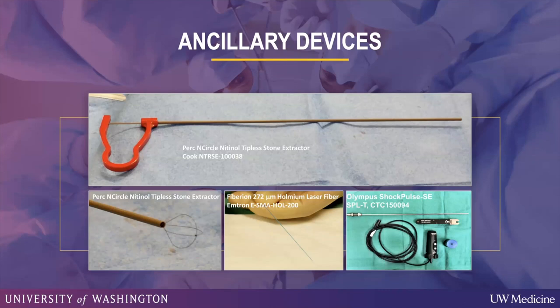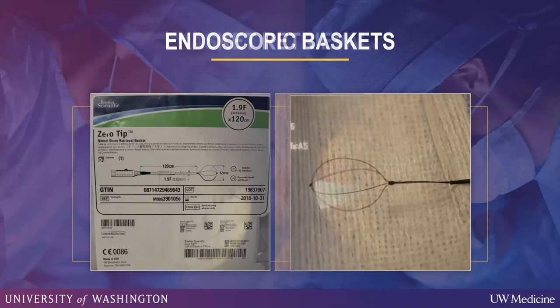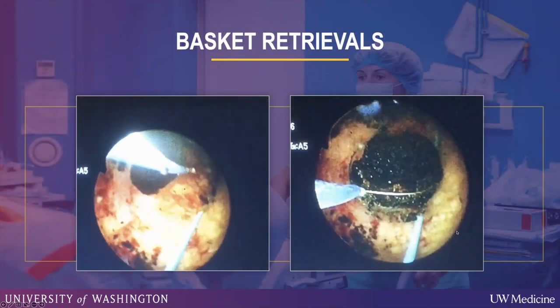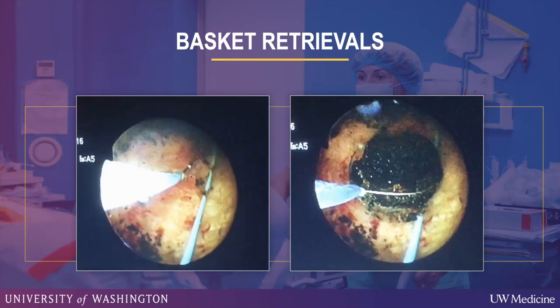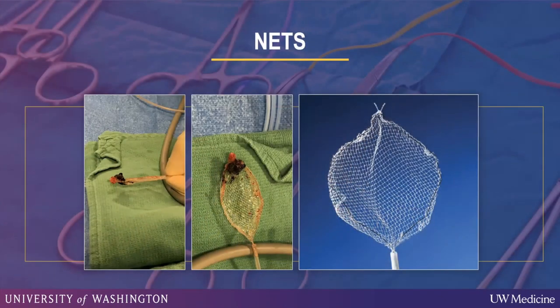Through the endoscopes we pass a variety of additional devices. Circle graspers are essentially stone-grasping devices. We use a zero-tip basket, which is a nitinol basket, along with end-circle graspers and other basket varieties. You can see the basket in action grabbing a stone in the biliary tree, genitourinary system, or gallbladder and pulling them out through the scope. We also have nets like the Roth net from gastroenterology, particularly useful for removing bezoars or gallstones.